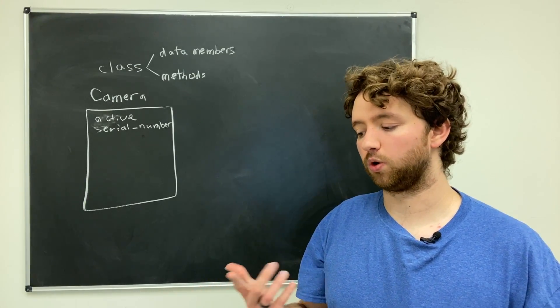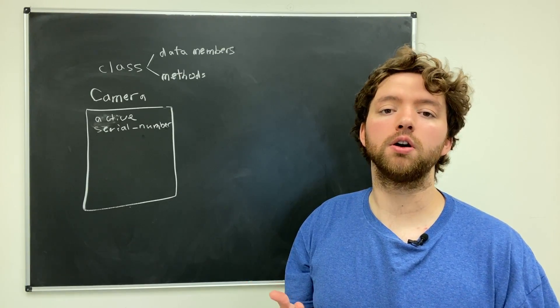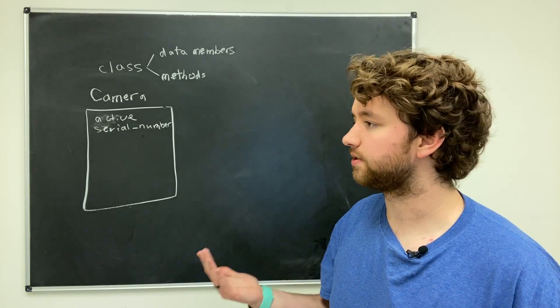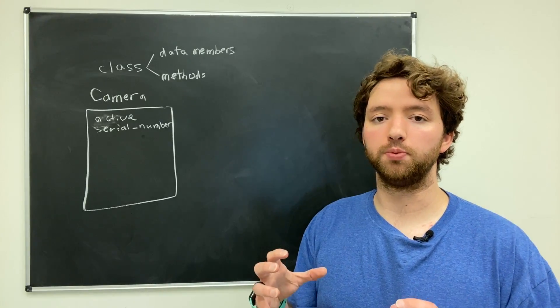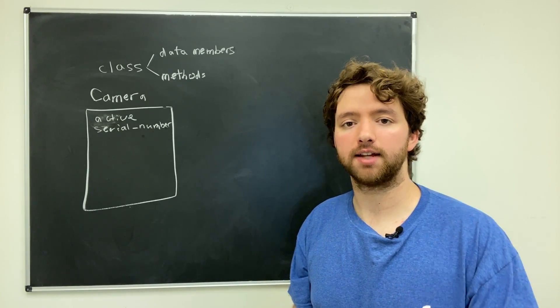Different programming languages have different ways of representing this, but you're going to hear words such as attributes, fields, properties, or just variables. It's just like a normal variable, but now it's going to be grouped in a container to describe a camera, and that container is known as an object.